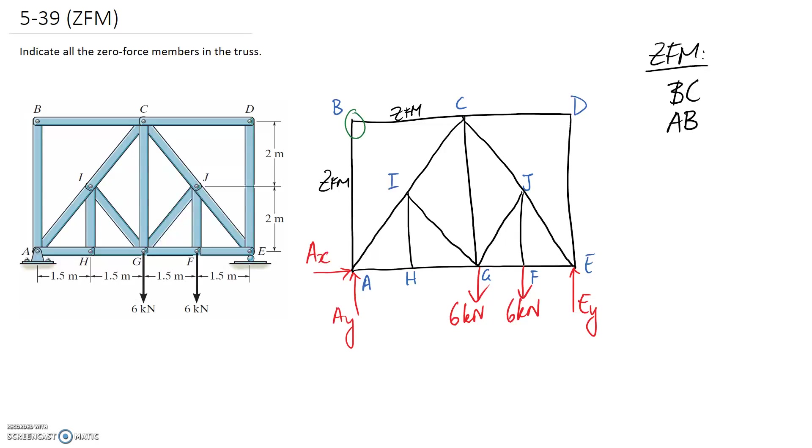Alright, we have another instance where the same rule can be applied and that's at node D. Let's make that a little bit nicer. So again, we have two coming together, no forces externally applied. So both of these are going to be zero force. So we've got CD and also DE.